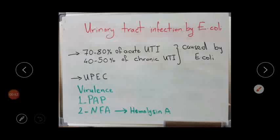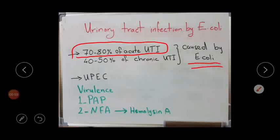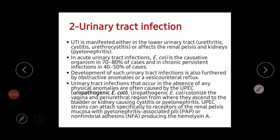70 to 80% of acute urinary tract infections are caused by E. coli, so you can imagine the high percentage. 40 to 50% of chronic urinary tract infections are also caused by E. coli. The urinary tract infection caused by E. coli may include the lower urinary tract, causing urethritis, cystitis, or urethrocystitis, or it may affect the renal pelvis and kidneys.